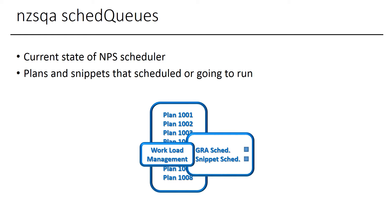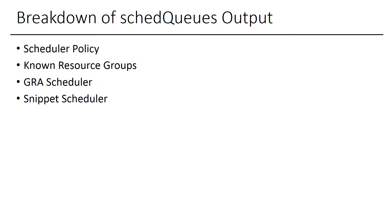The schedQueues command is one of the most useful tools that can help you understand the current WLM setup and troubleshoot scheduling issues in NPS. The schedQueues output is indeed complex and provides a lot of information. This command produces point-in-time information for every scheduler as well as usage summary, resource availability, etc. It displays plans and snippets — those scheduled to run or currently running on NPS. This output has four distinct sections: the Scheduler Policy, Known Resource Group, GRS Sked, and the Snippet Sked sections.